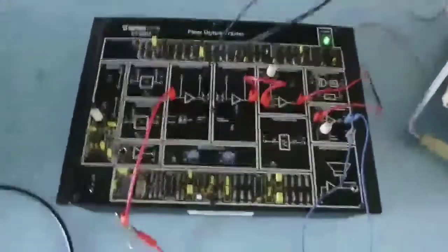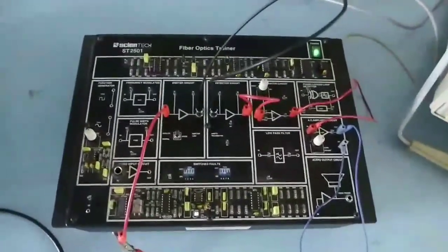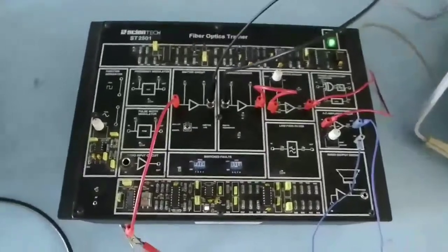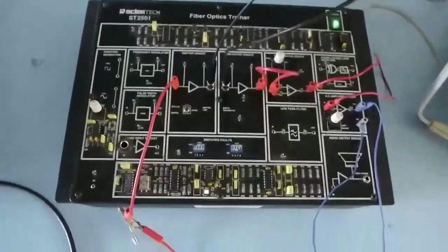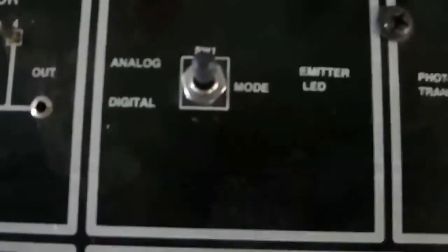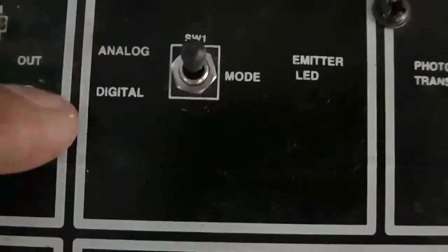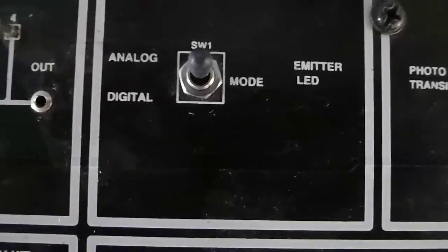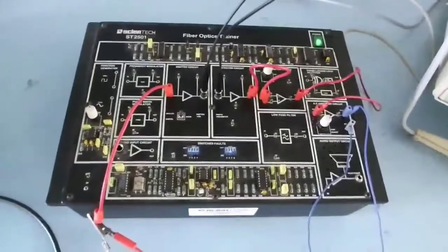For Analog Link, the same kit is used for the Digital Communication Link. We have to change the knob position here. For Analog to Digital or Digital to Analog, there is a mode switch. The connections are the same for both Digital and Analog Link.